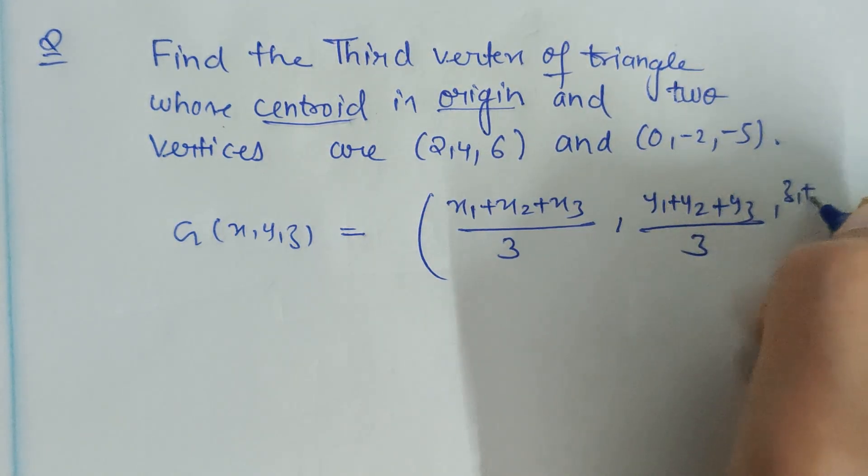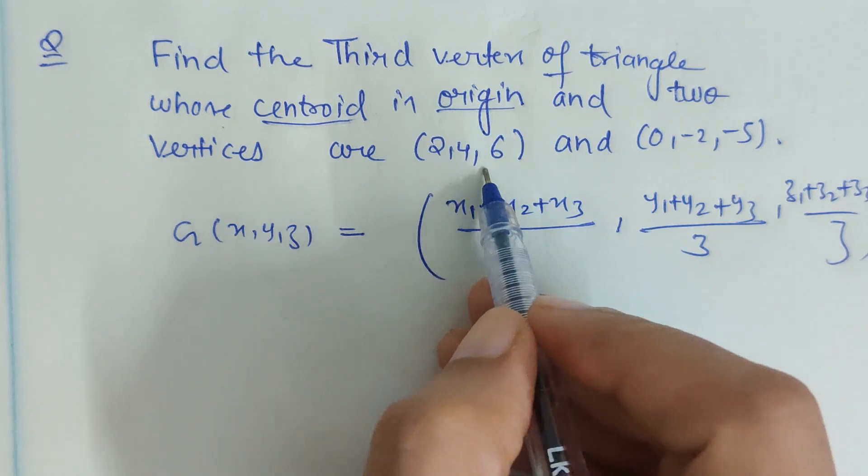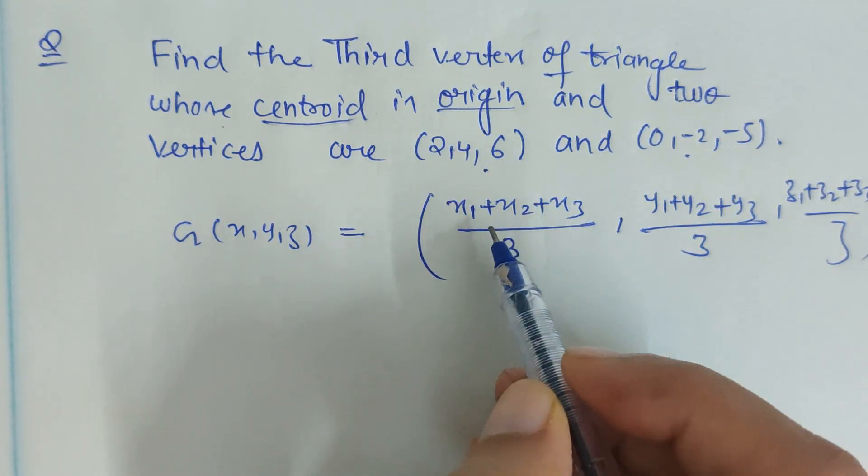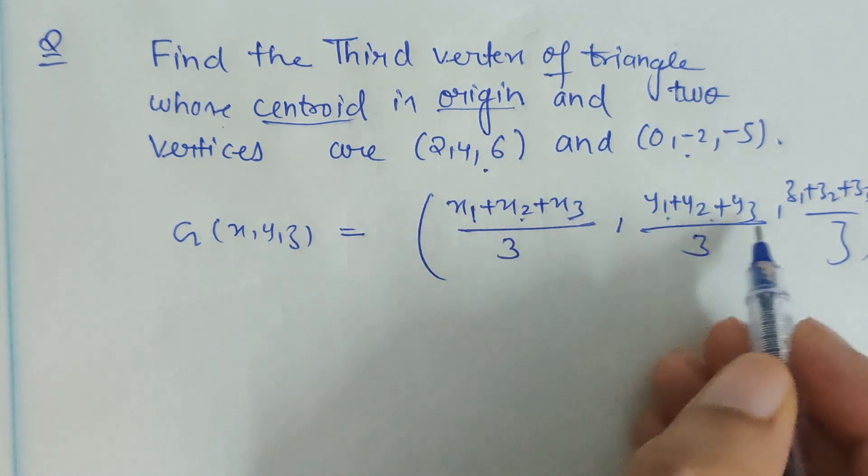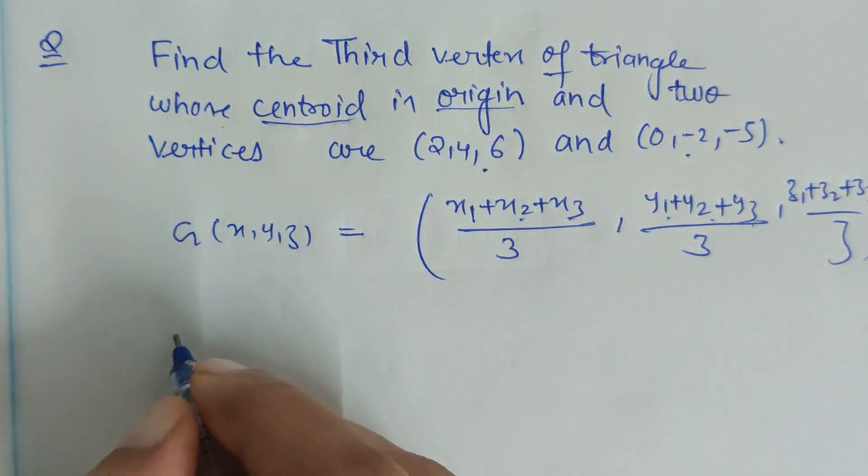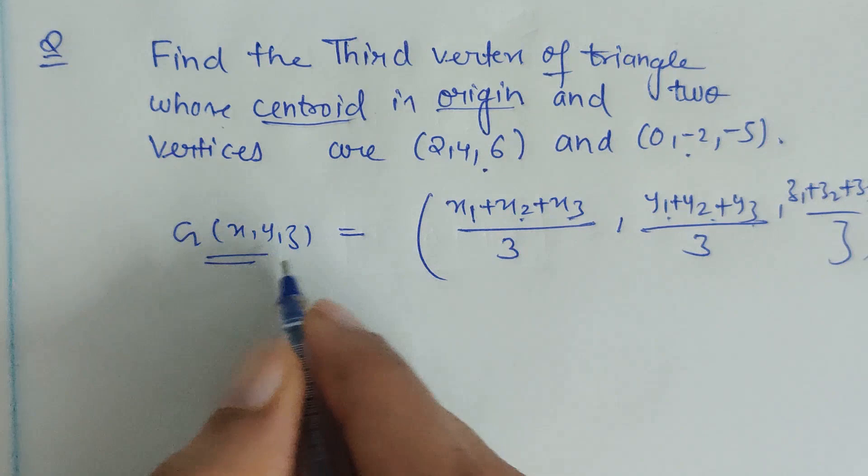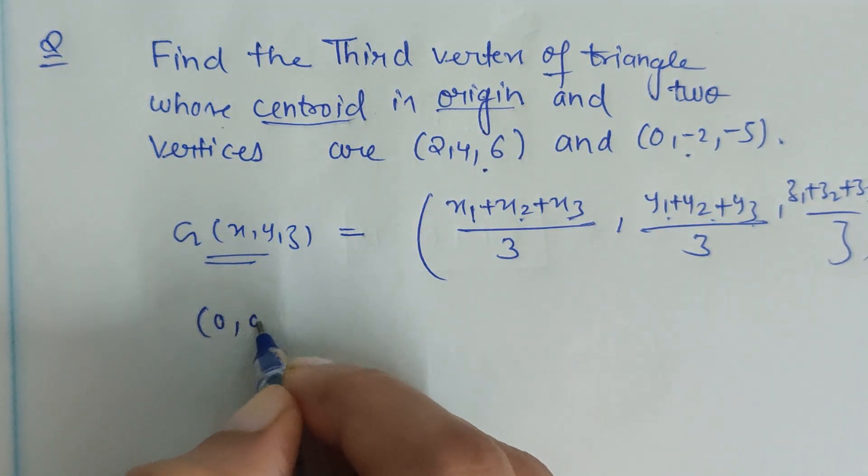So let us suppose two of the vertices are given to us, like x1,y1,z1 is given, x2,y2,z2 is given, and we are to find x3,y3,z3. Let's find out. And here the centroid is given to us as origin, that means (0,0,0).